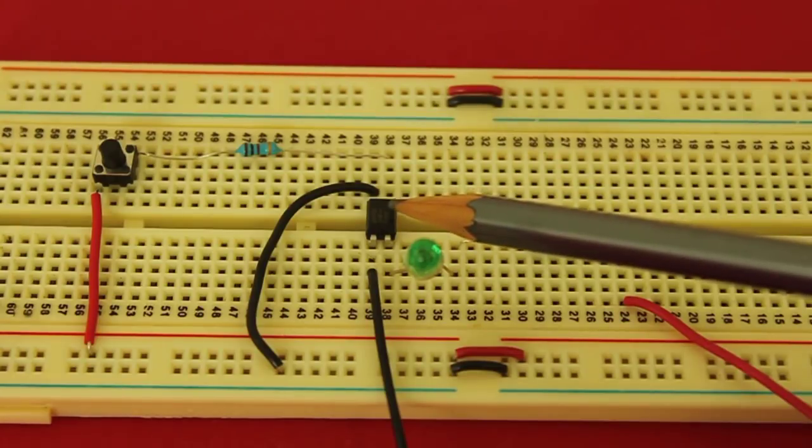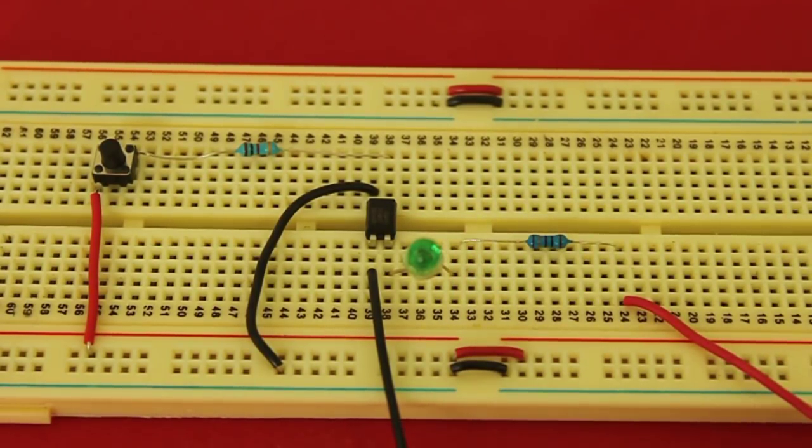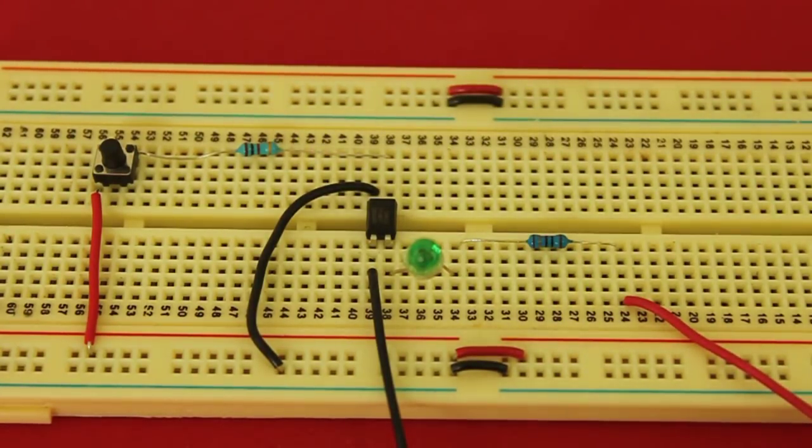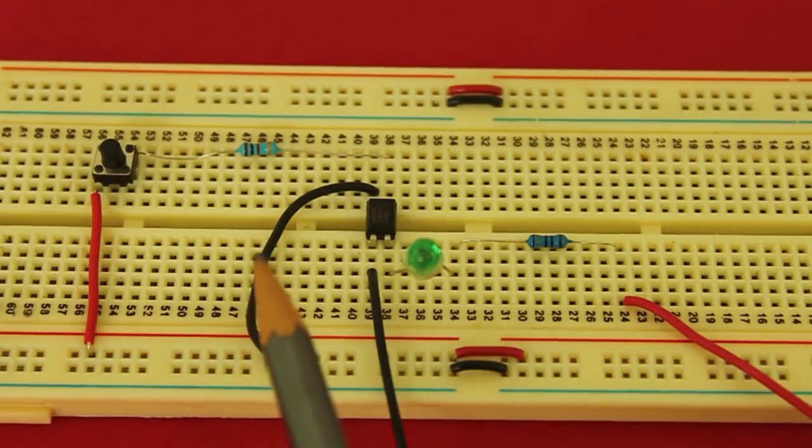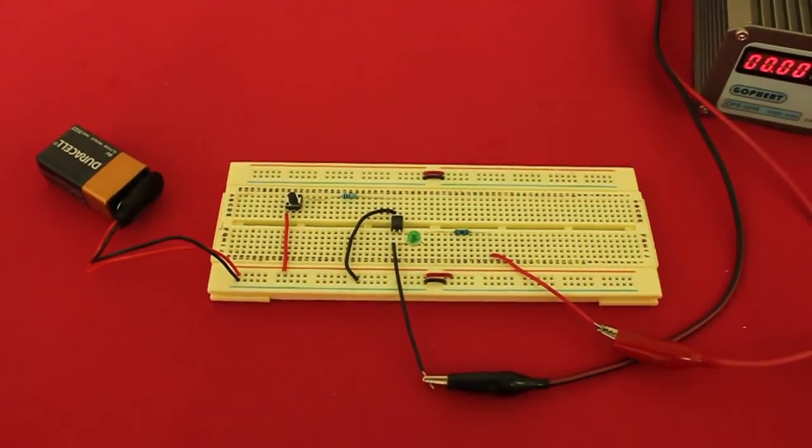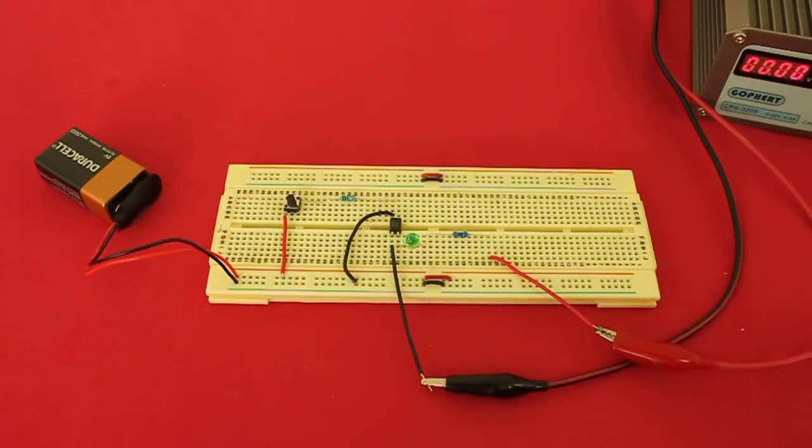Here we have the optocoupler, the LED that we will turn on with its resistor, the input resistor, the switch, and notice that these are the two grounds which are different. One is the negative of the battery and the other is the negative of the power supply.